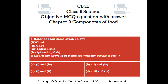Question number 4. Read the food items given below: 1. Wheat, 2. Ghee, 3. Iodized salt, 4. Spinach, 5. Palak. Which of the above food items are energy-giving foods? Option A: 1 and 4. Option B: 2 and 4. Option C: 1 and 2. Option D: 3 and 4.